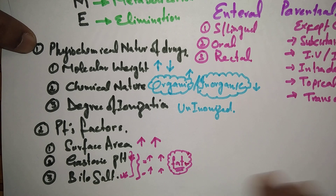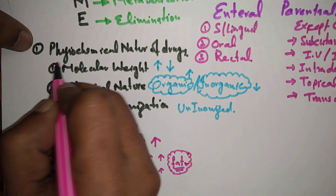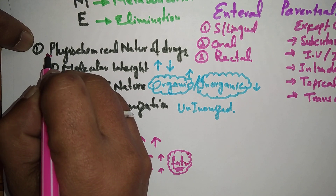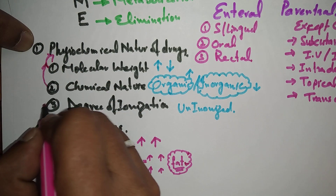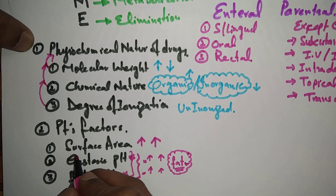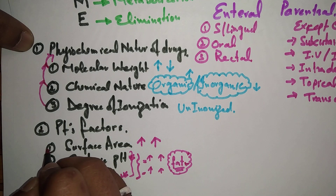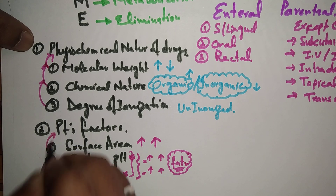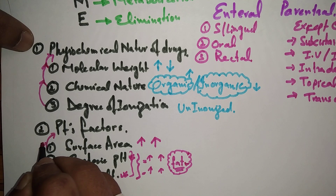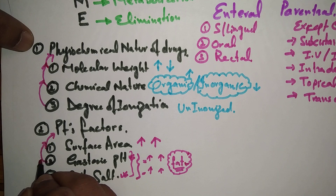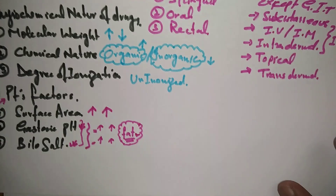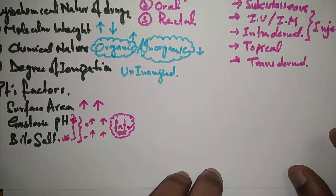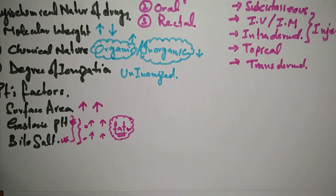So in total we have six factors: according to physicochemical nature we have molecular weight, chemical nature, and degree of ionization; and in patient's factors we have surface area, gastric or duodenal pH, and bile salts.